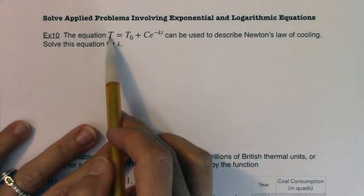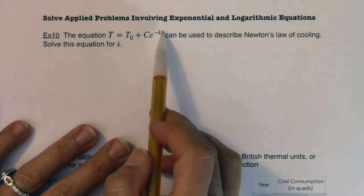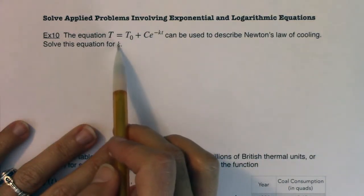The equation T equals T sub zero plus C e to the negative kt can be used to describe Newton's Law of Cooling. Solve this equation for k.